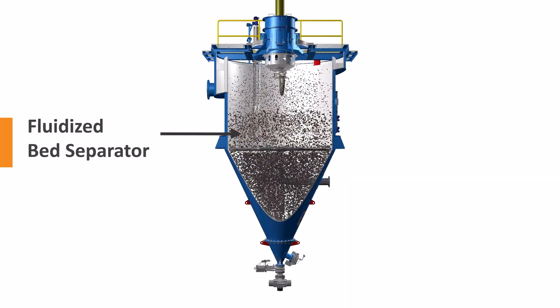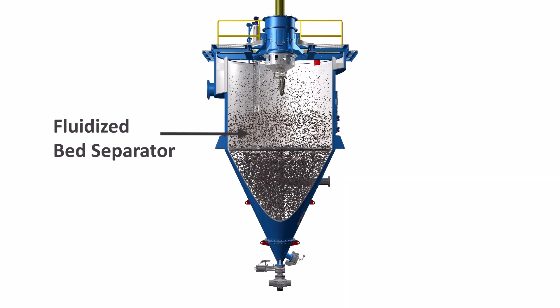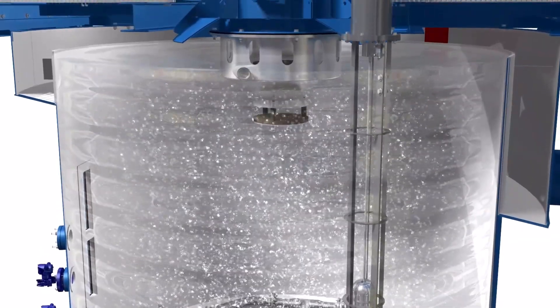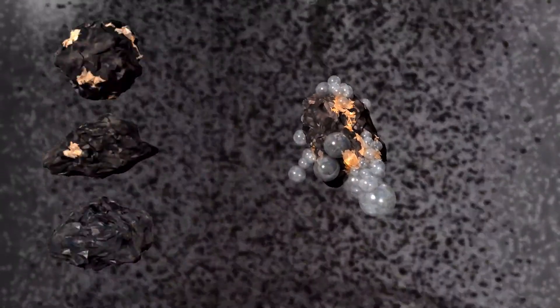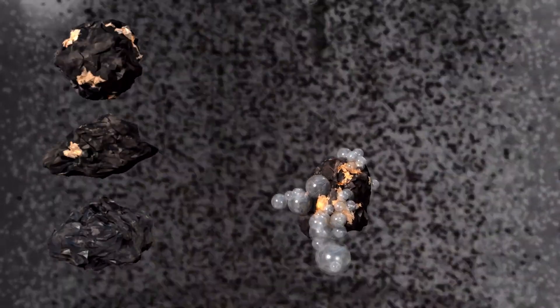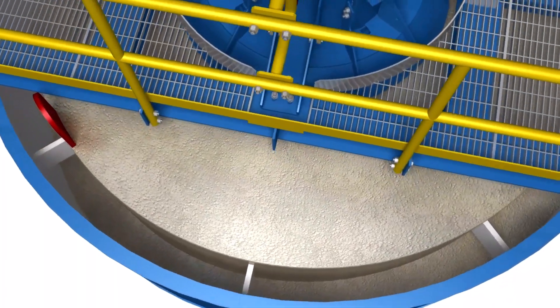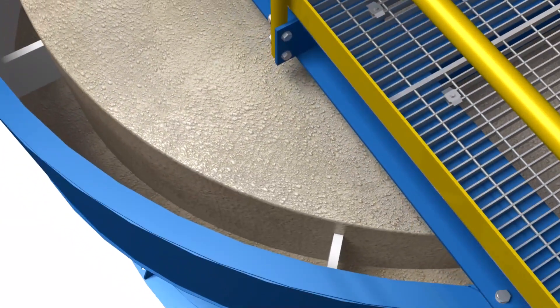In the Hydrofloat, the fluidized bed is continuously aerated by injecting compressed air and a small amount of frothing agent into the fluidization water. The air bubbles attach to the hydrophobic particles, thereby reducing their effective density. The lighter bubble particle agglomerates rise to the top of the fluidized bed and overflow the top of the cell.